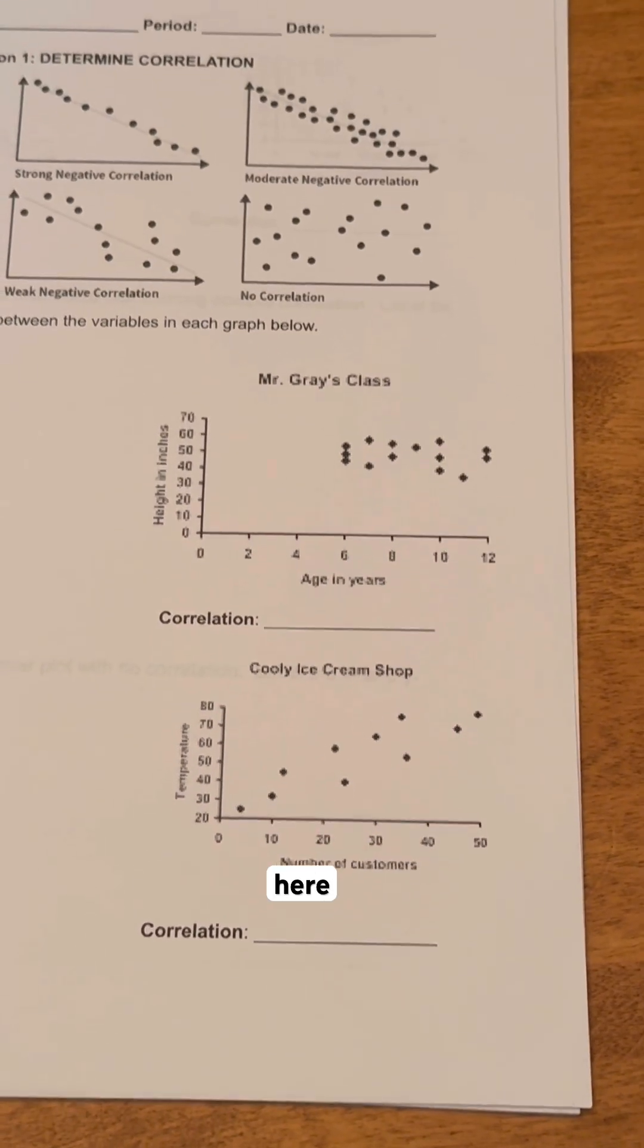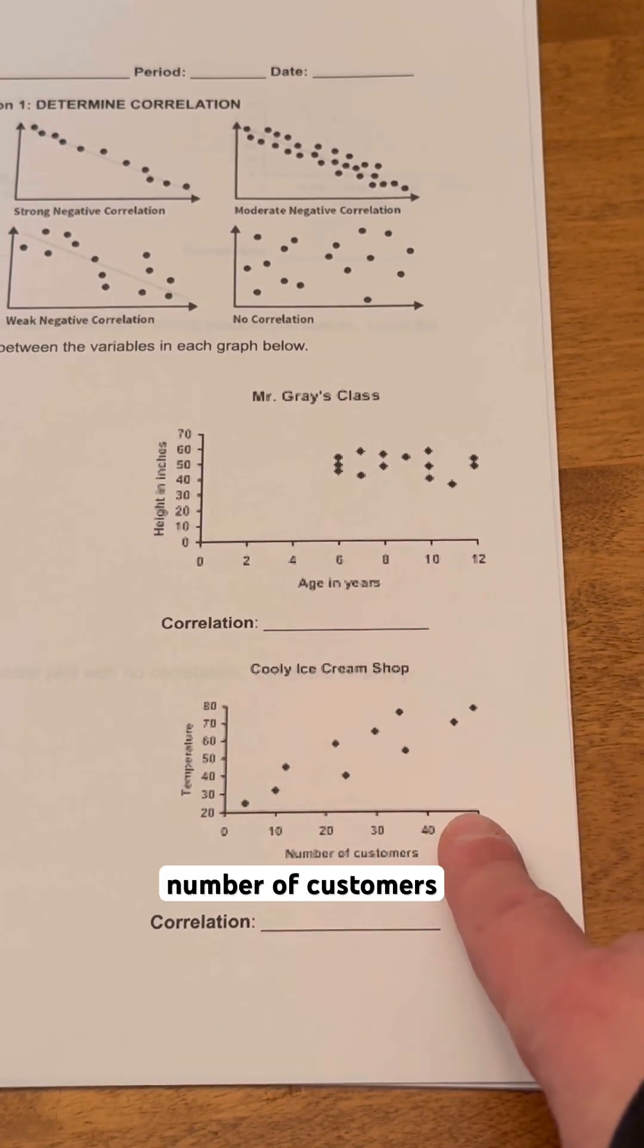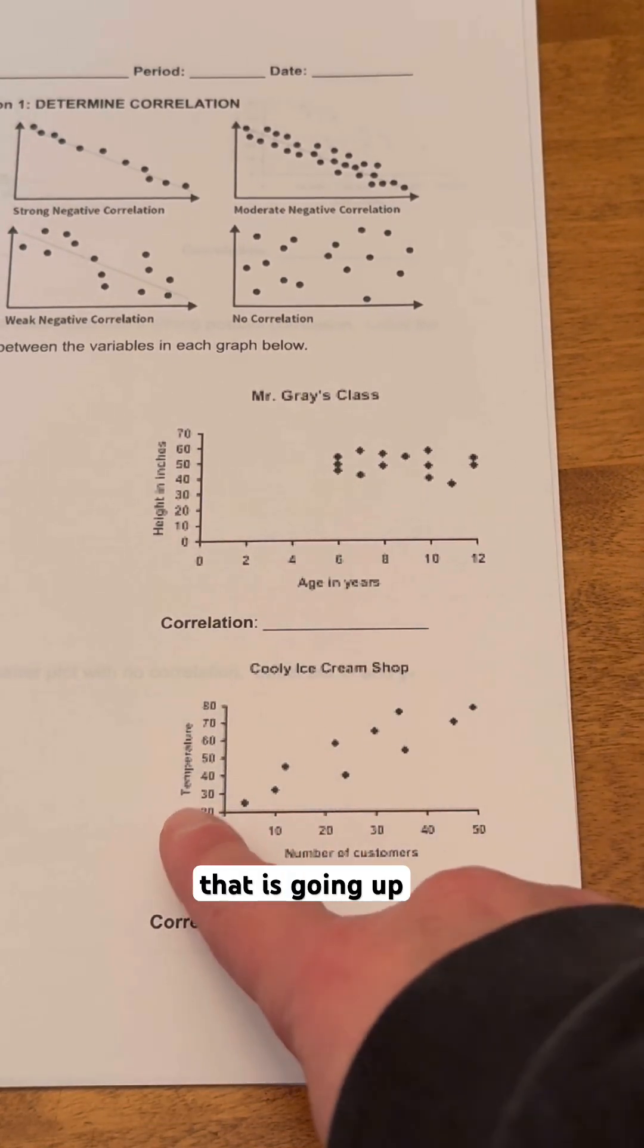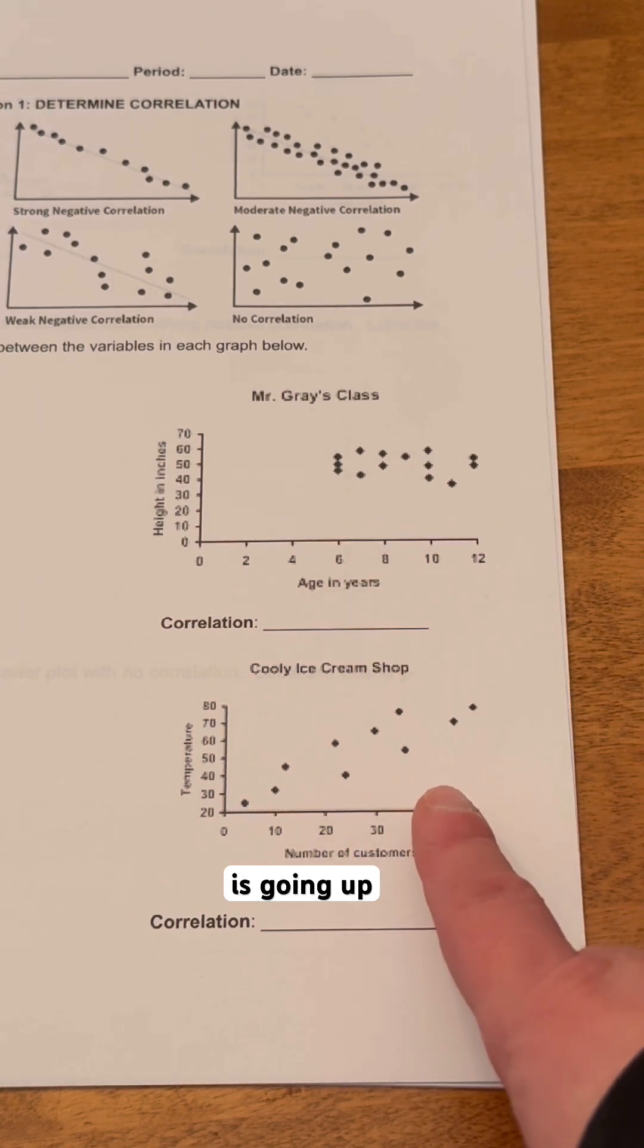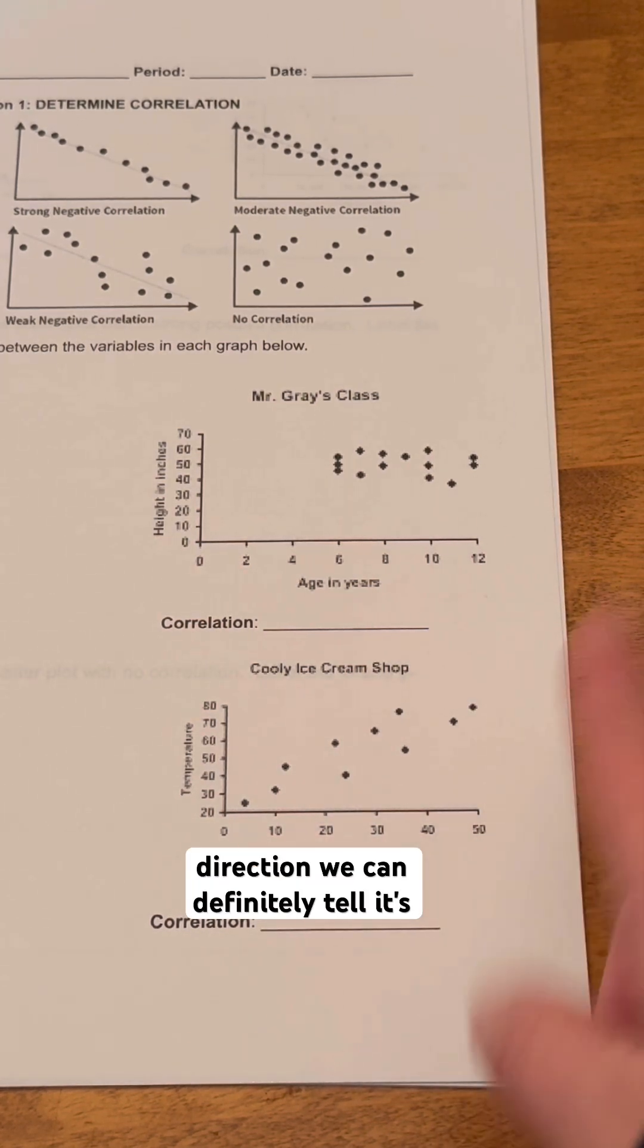And then the last one down here, this is the Cooley Ice Cream Shop and the number of customers. As that is going up, generally speaking, the temperature is going up. So that would be the correlation as the customers and temperatures are going up. In this case, this is a little bit weaker positive correlation because it's not as close together and it is going in a positive direction. We can definitely tell it's going up.